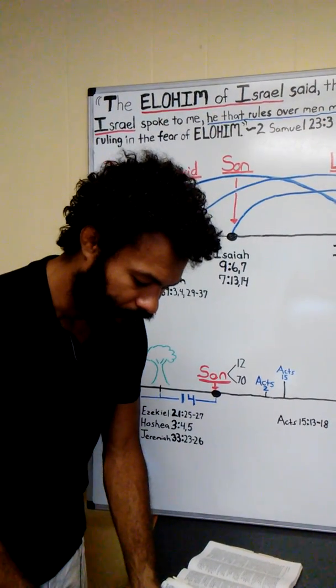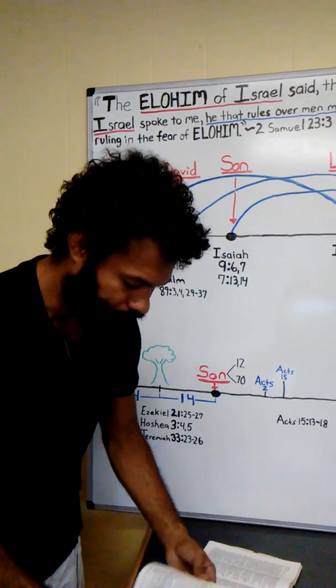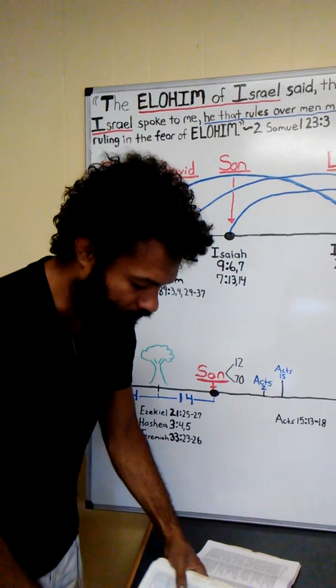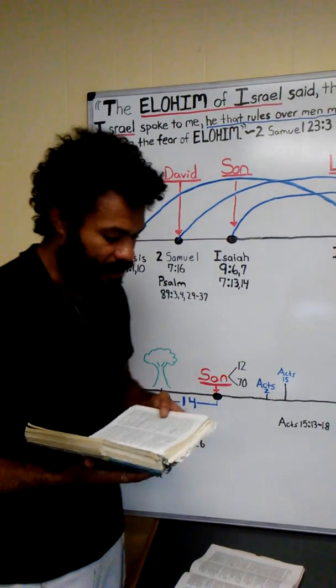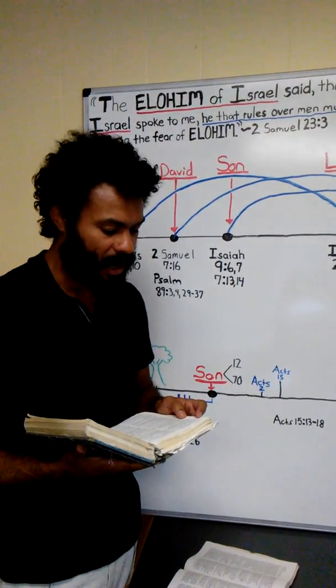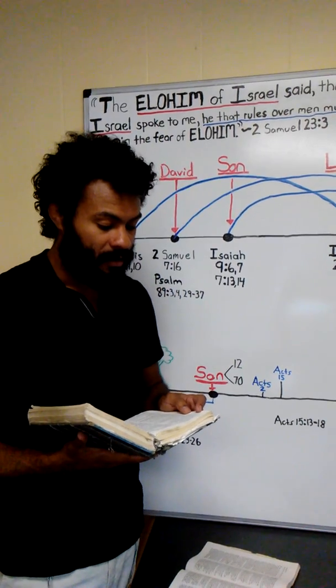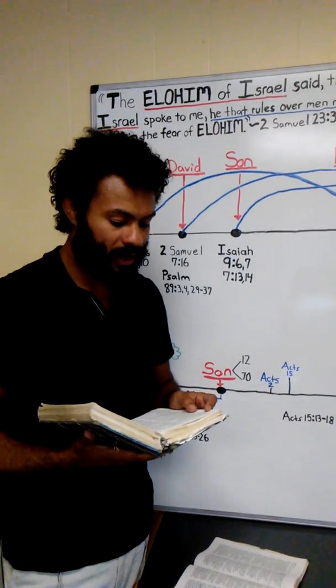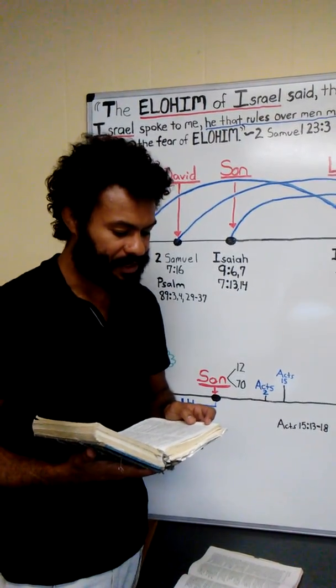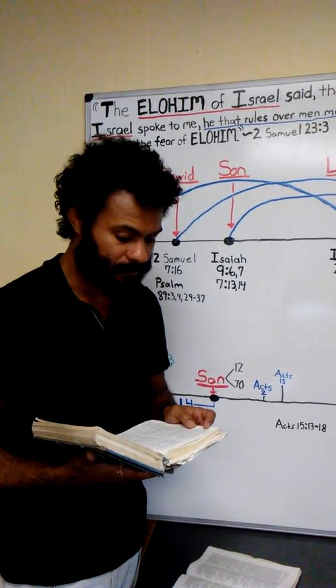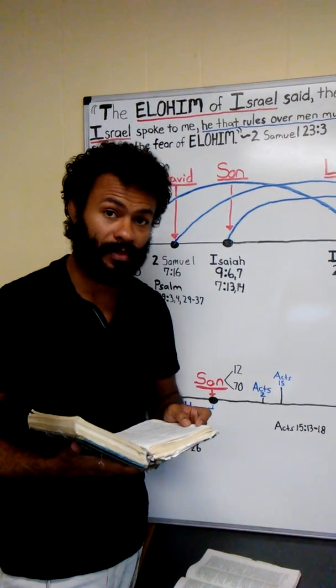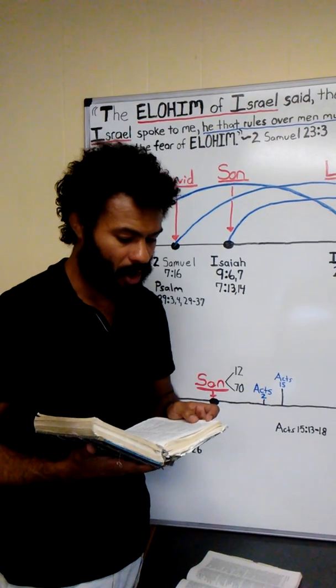In Isaiah chapter 9, verses 6 and 7, it gives us more information about this son. This is about the son that's going to come, the house of David: For a child shall be born unto us—this is talking about Israel, specifically the house of Yehudah. A son shall be given unto us. And the rule is on his shoulders. The rulership shall be upon his shoulders.